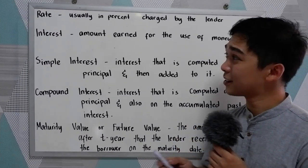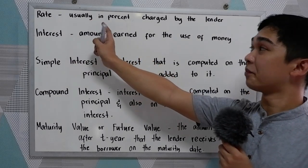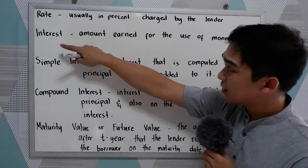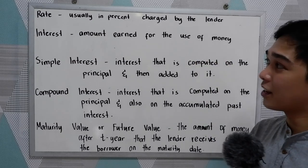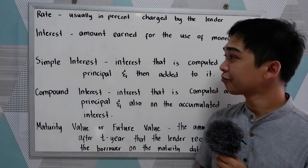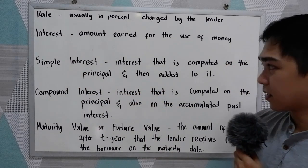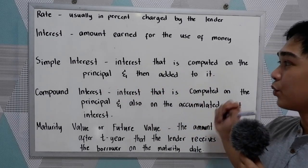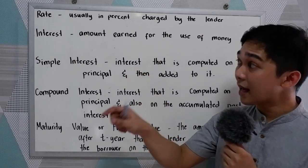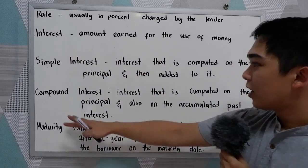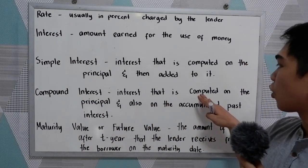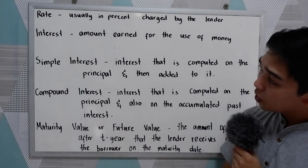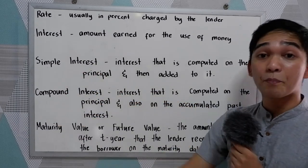We also have the following terms. The rate is usually in percent form and is charged by the lender. The interest is the amount earned for the use of money, usually set by the lender. Simple interest is interest computed on the principal and then added to it — so the simple interest equals the principal plus the interest. Compound interest is interest computed on the principal and also on the accumulated past interest. We will discuss the differences between the two later.